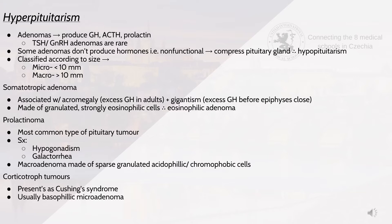Somatotropic adenomas are associated with acromegaly — excess growth hormone in adults — as well as gigantism, which is excess growth hormone before the epiphysis closes. They are made of granulated, strongly eosinophilic cells, causing an eosinophilic adenoma. Prolactinomas are the most common type of pituitary tumour, with clinical features including hypogonadism and galactorrhea. Corticotroph tumours present as Cushing's syndrome and are usually basophilic microadenomas.